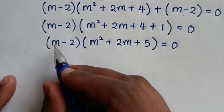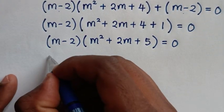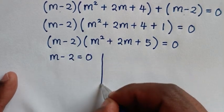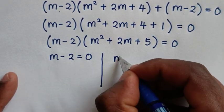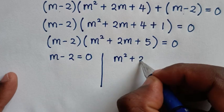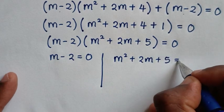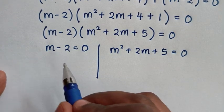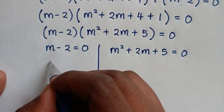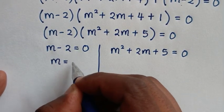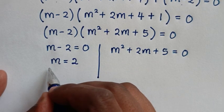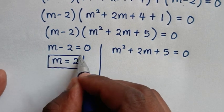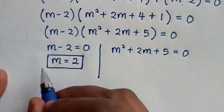From the first factor, (m - 2) = 0, so taking -2 to the other side gives m = 2. This is the first value of m, which is a real solution.